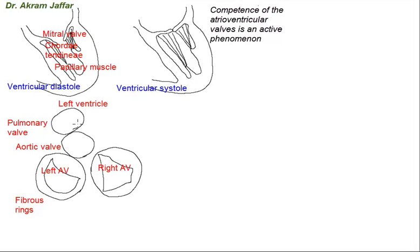The fibrous rings provide attachment for the leaflets of the cusps of the valves — whether the semilunar cusps or the cusps of the atrioventricular valves — and they provide attachment for the myocardium. In addition, they act as an electrical insulator between the atria and ventricles, so that the only pathway for the electrical impulse from atrium to ventricle is through the membranous part of the interventricular septum, which is another part of the skeleton of the heart.